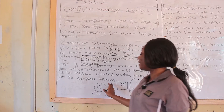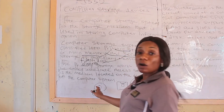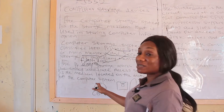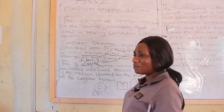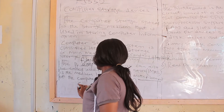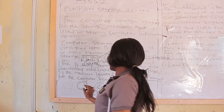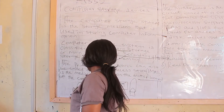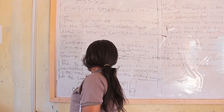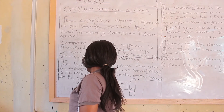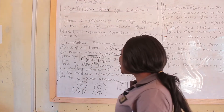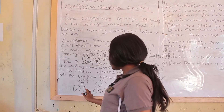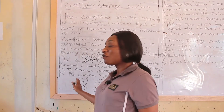We also have the compact disk, which we use to save our information. We also have the DVD. The DVD is a place where you can also save your information. DVD means digital versatile disk. It is also used to save your information.